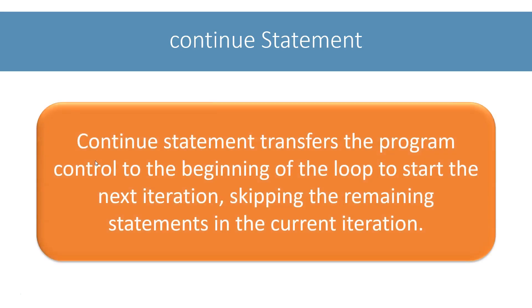In this lesson, we will look at the second jump statement: continue. The continue statement transfers program control to the beginning of the loop to start the next iteration, skipping the remaining statements in the current iteration.